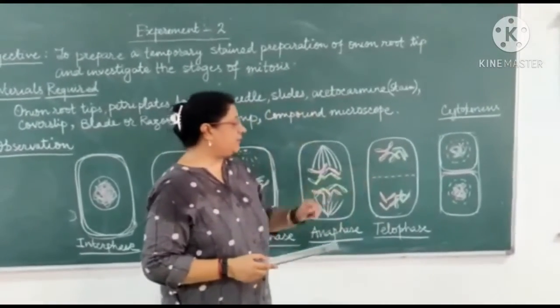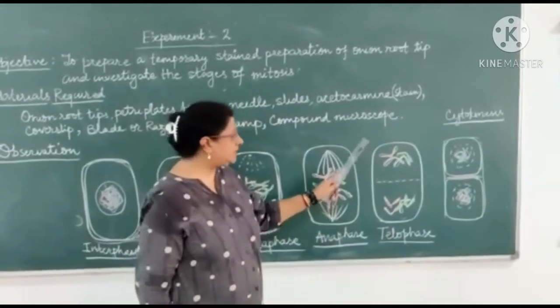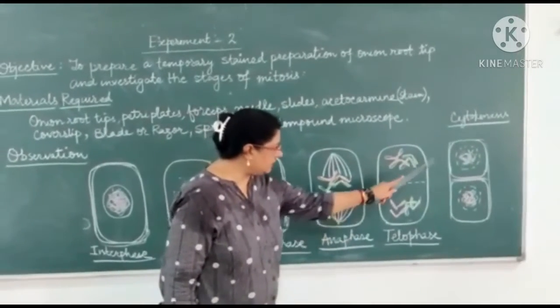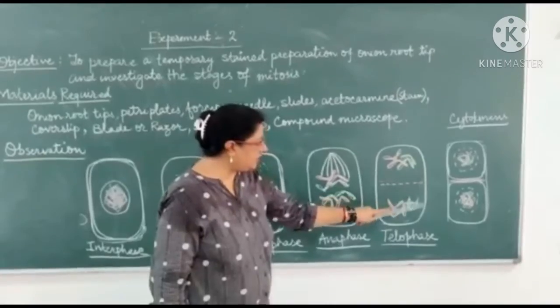If it is plant cell, cell plate formation is there. If it is animal cell, then cell furrowing starts, just an invagination in the cell.